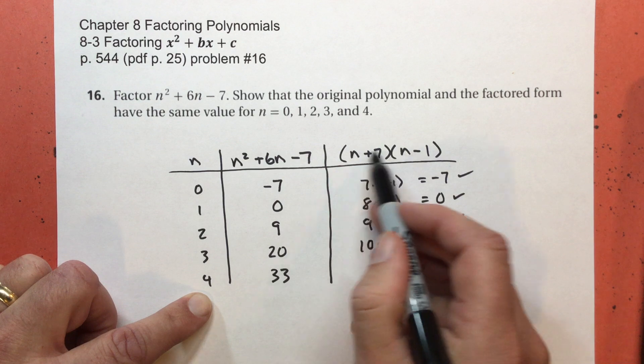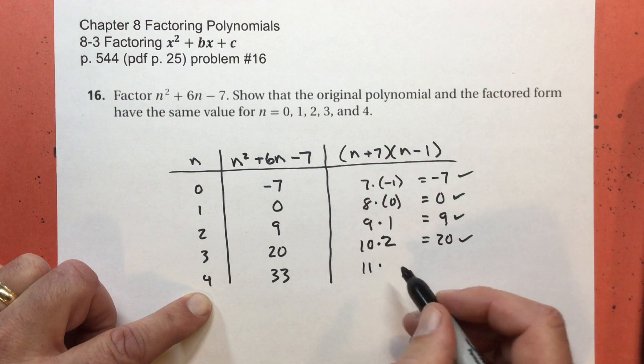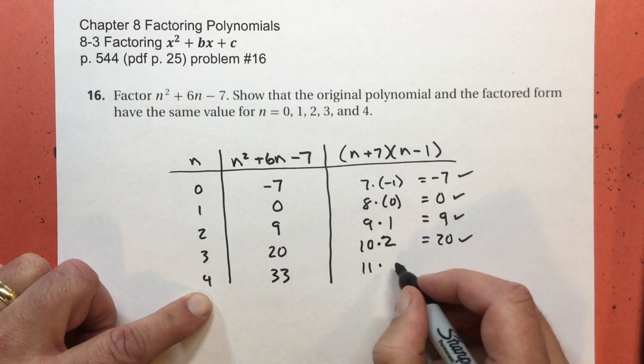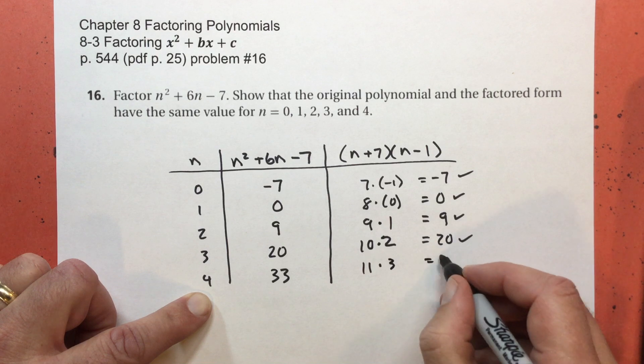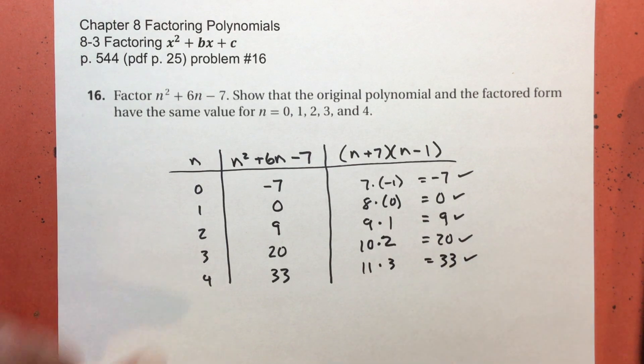And finally, 4 plus 7 equals 11. And 4 minus 1 equals 3. 11 times 3 equals 33. So that's all you have to do for that. So I showed that I factored it correctly. That's the point of that one.